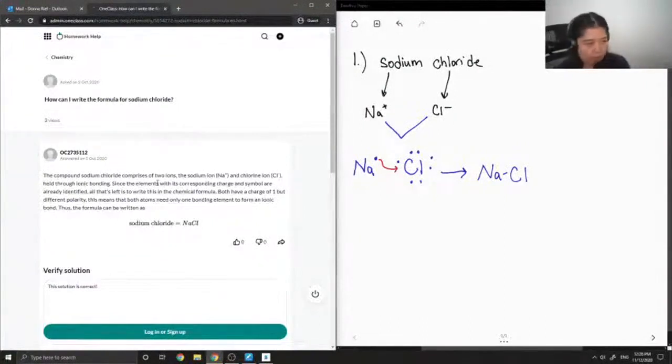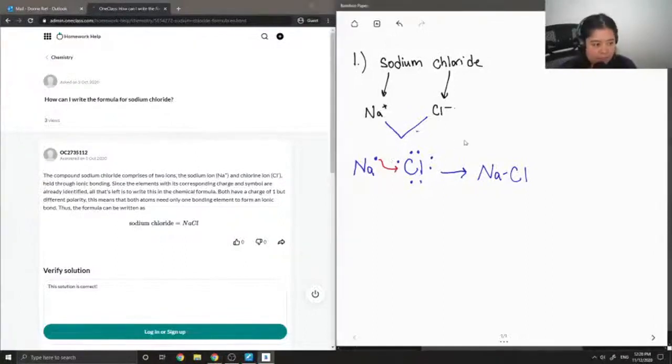Over here on the right I have that sodium chloride is a salt that is comprised of the sodium ion, which is Na+, and the chlorine ion, which is Cl-. I'm going to show how these ions were formed.